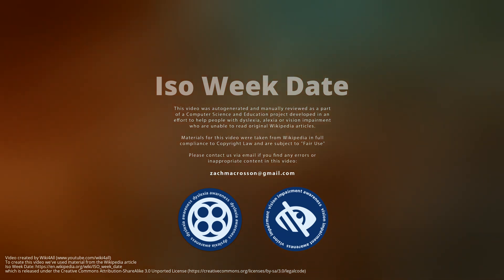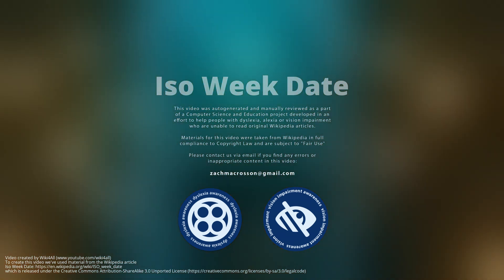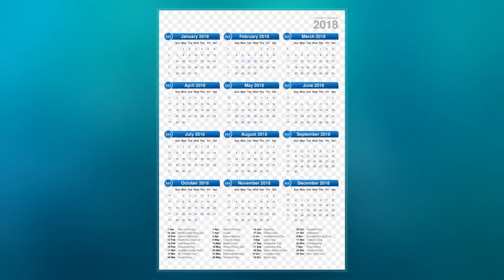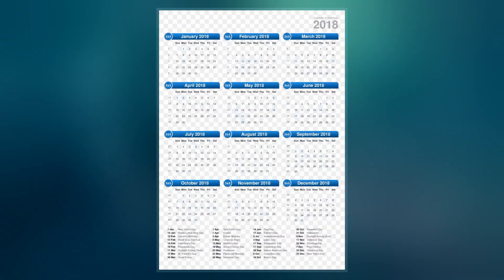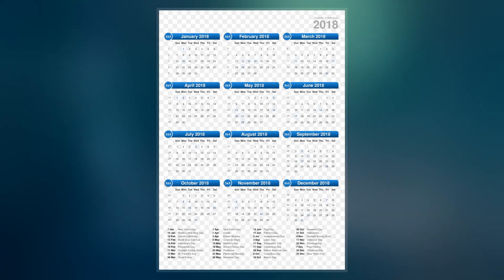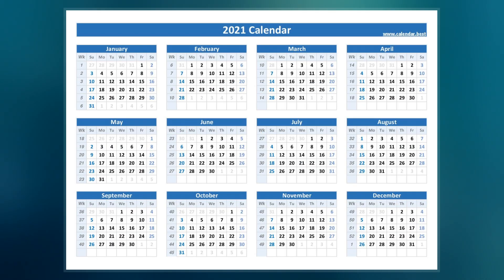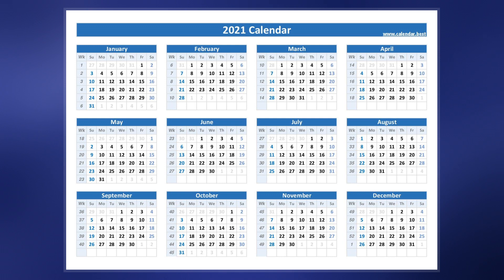The ISO week date system is effectively a leap week calendar system that is part of the ISO 8601 date and time standard issued by the International Organization for Standardization since 1988, and before that, it was defined in ISO 2015 since 1971.